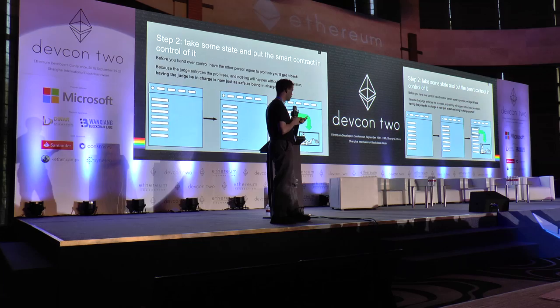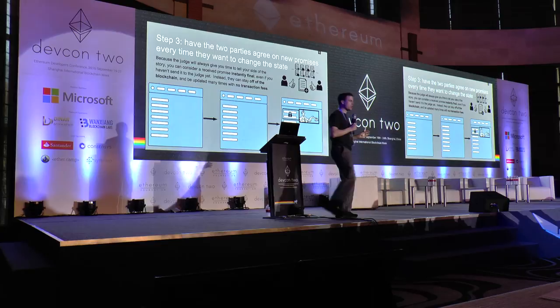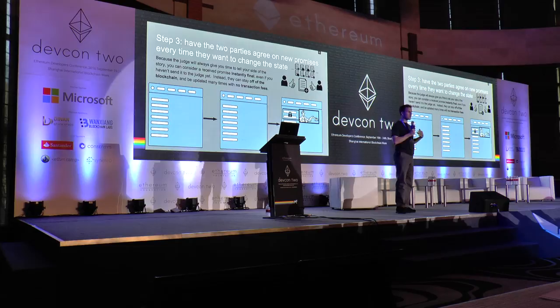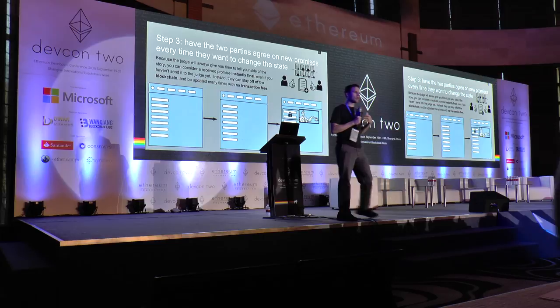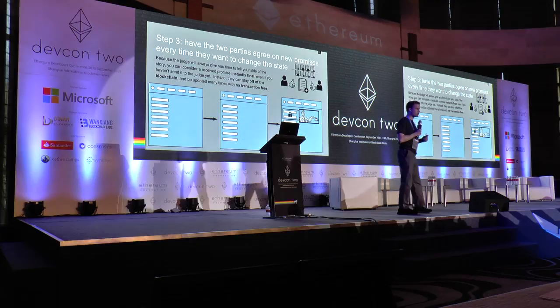Step three: now we're all set up and ready to go. This is the awesome part about state channels — the two parties can just agree on new promises. This is the new thing we want to do with our state, the new way we want to transfer these tokens, the new way we want to update this value that the smart contract is in control of. Because you know the judge will always give you time to tell your side of the story, the instant you receive a promise agreed upon by both parties, it is instantly final. Even if the other party tries to pretend a previous version was what was going on, the judge will not be fooled — they will always give you time to submit your response. All of these promises can stay off of the chain.